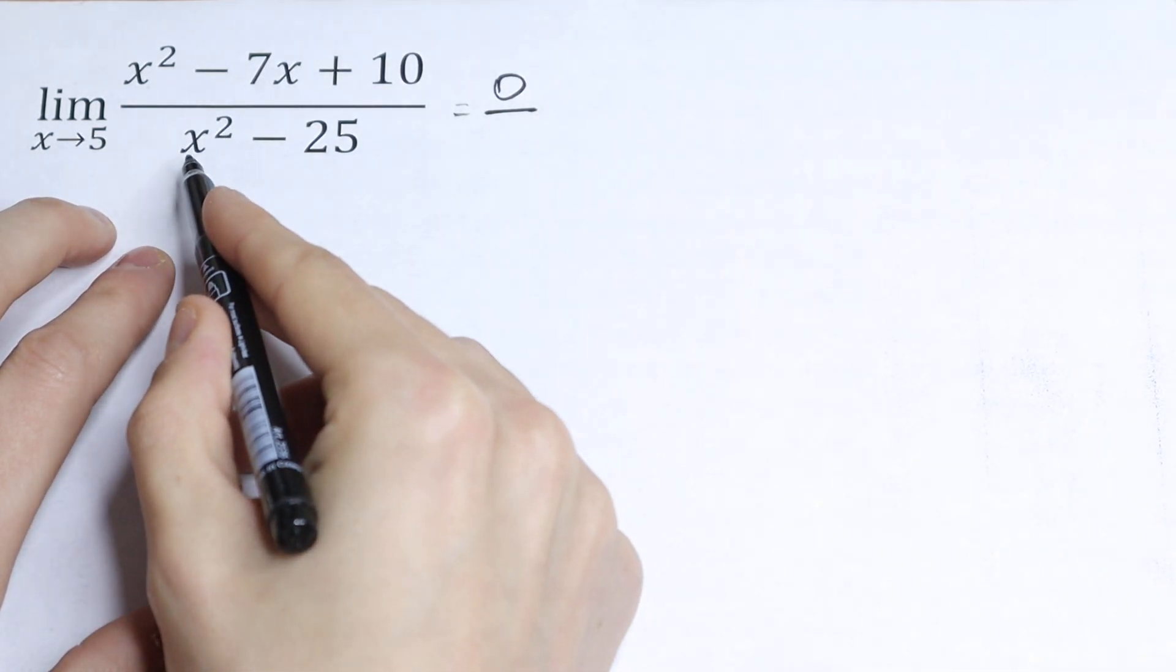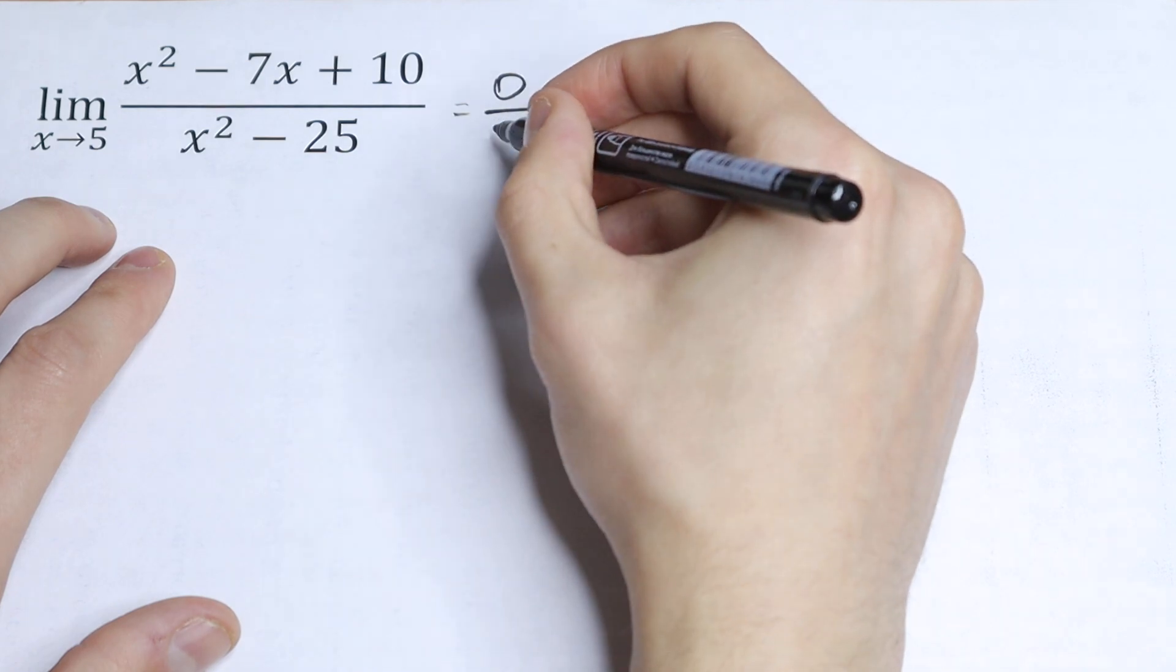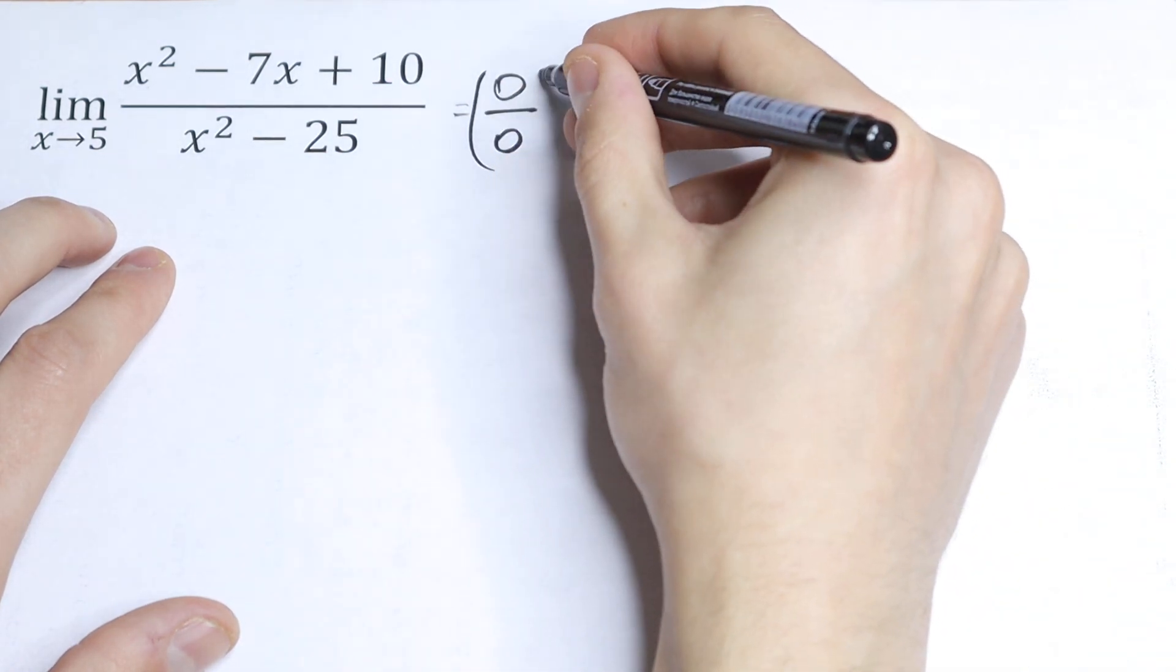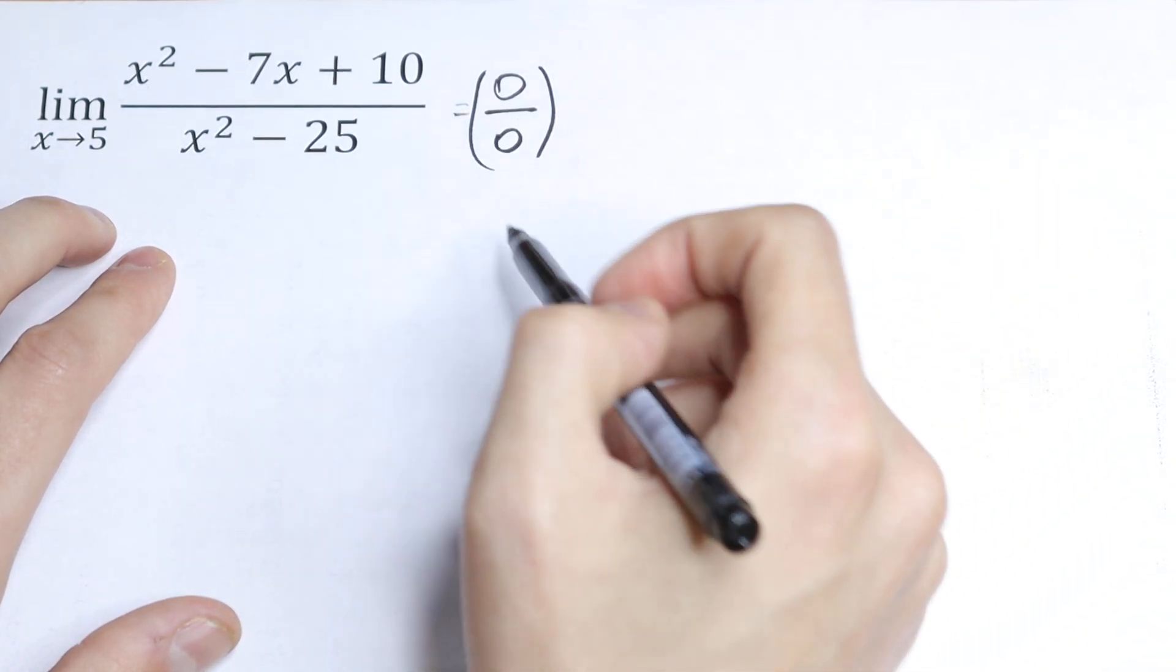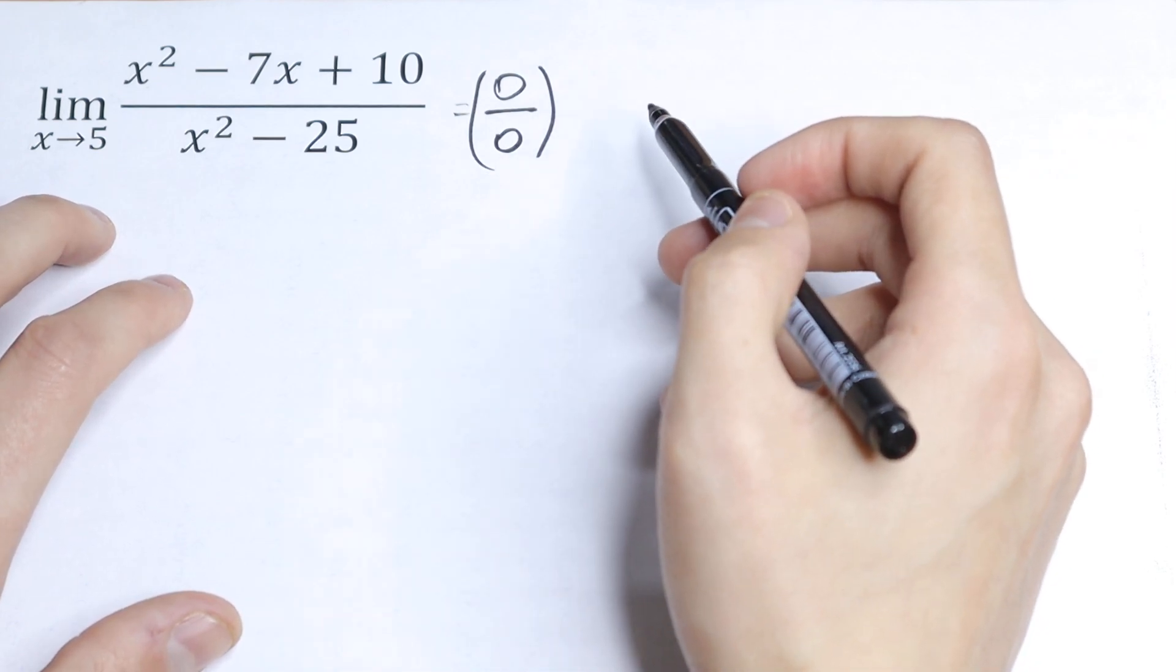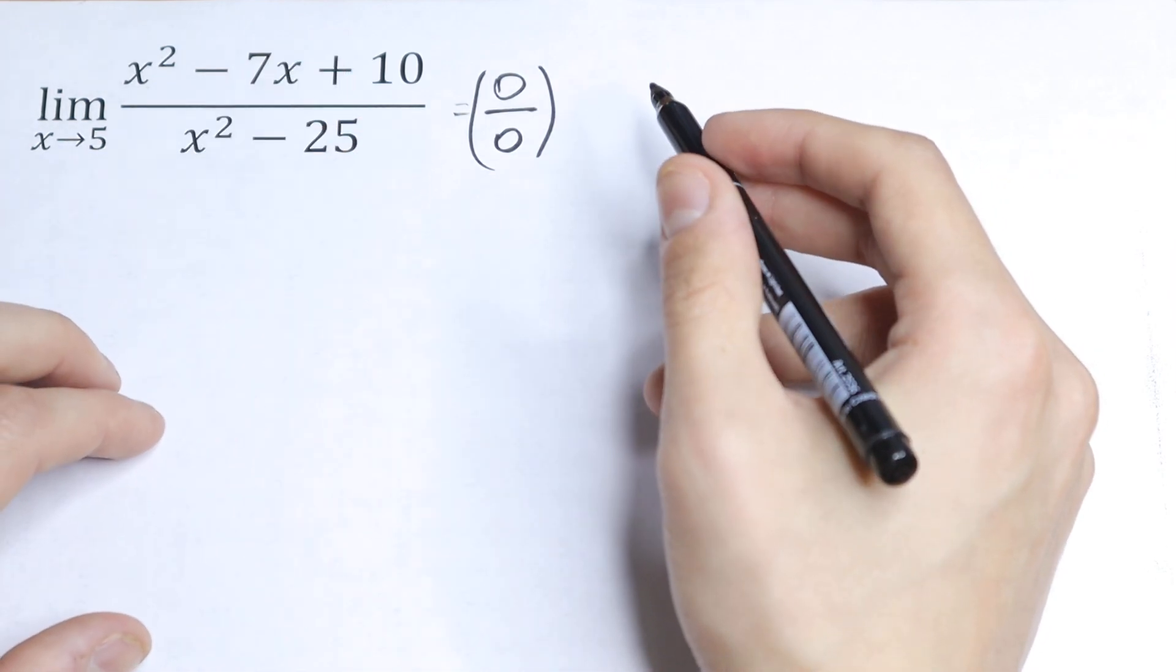In the denominator, we have 25 minus 25, which also equals 0. So we get 0 over 0. As you know, 0 over 0 is undefined, so we don't know what value that represents.